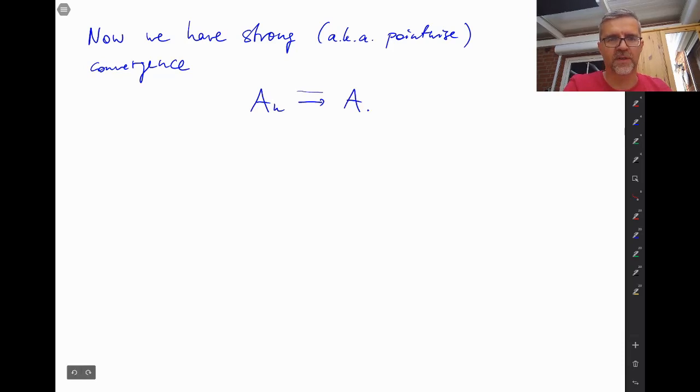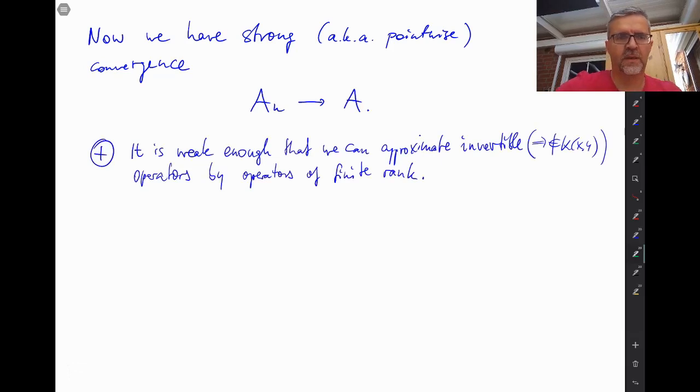And in contrast to the two arrows that we usually make for uniform convergence, we denote the strong convergence by just one arrow. And the important message is, on the positive side, that it is weak enough that we can approximate invertible and hence not compact operators by operators of finite rank.